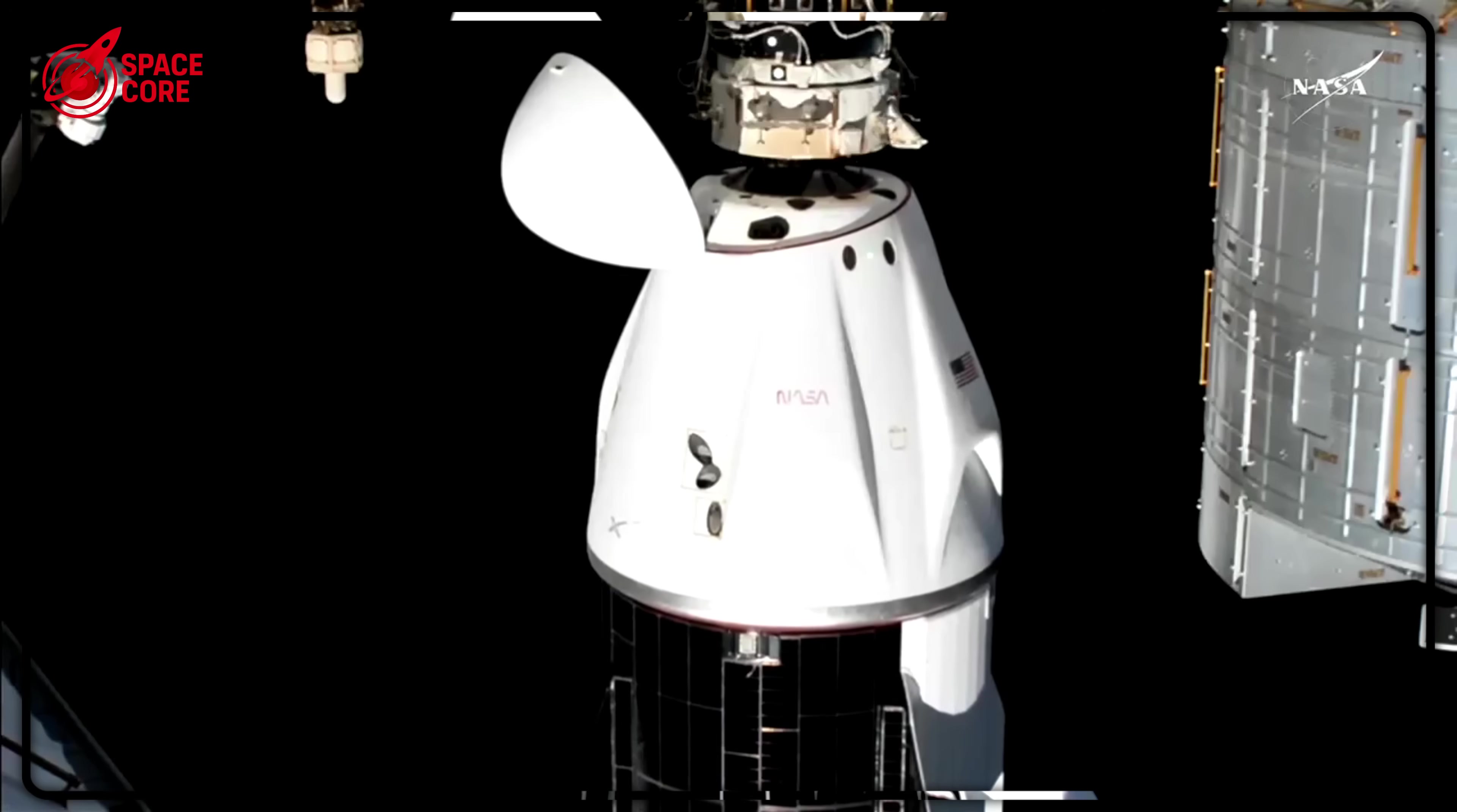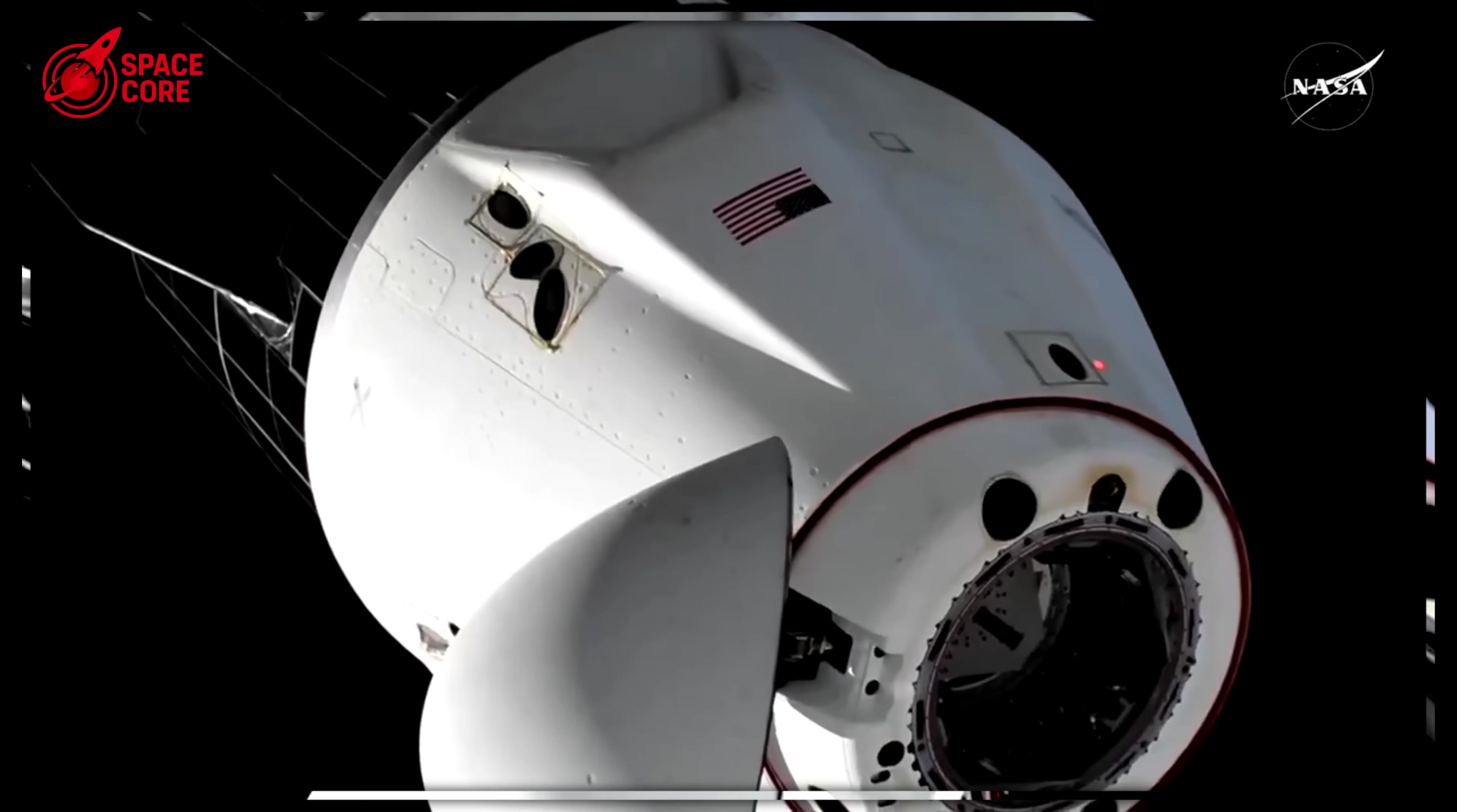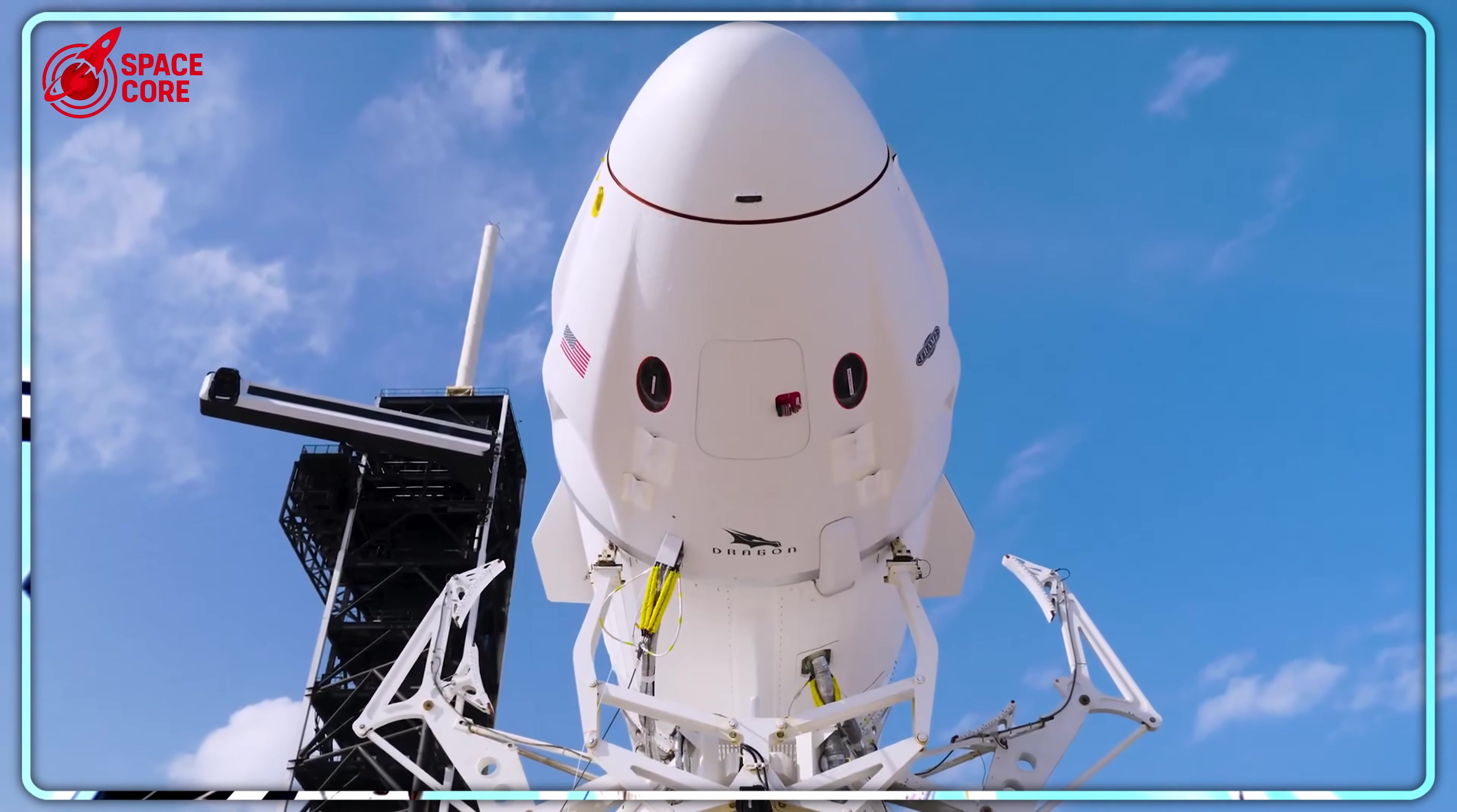In late 2024, Musk dropped a bombshell that shocked the space industry. He suggested Dragon, the capsule that brought American human space flight back from extinction, might be retired sooner than anyone expected. Dragon is awesome as a capsule architecture, Musk tweeted, but we need to move beyond that to rapidly reusable propulsive landers. He wasn't talking about improving Dragon. He was talking about replacing it entirely with Starship. But here's the mind-blowing part. This isn't just about better technology. This represents a complete philosophical revolution in how humans will travel through space.